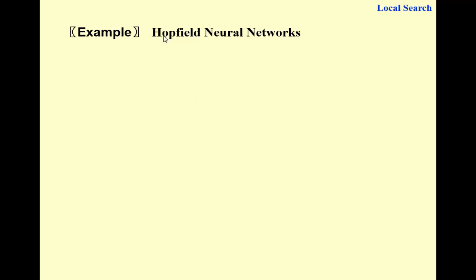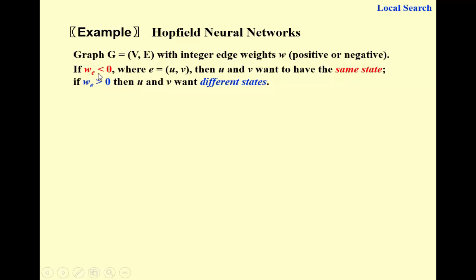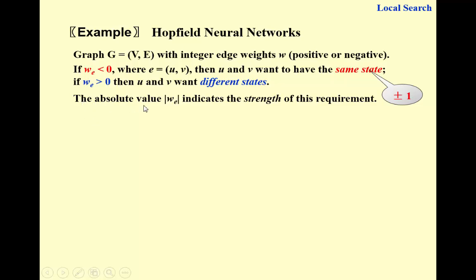Our next example is about Hopfield neural networks. Given a graph with integer edge weights w, which can be positive or negative. If the weight is negative, it means we would like both ends to have the same state — represented by positive or negative 1, colored both white or both black. If the weight is positive, it means the two ends would like to have different states. The absolute value of the weight indicates the strength of this requirement.